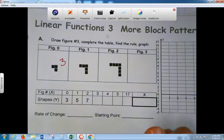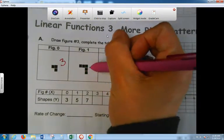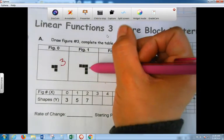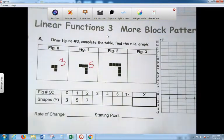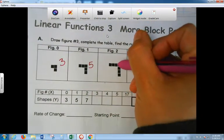6. Here? 6. No. Count? 1, 2, 3, 4, 5. Write it down. 7. 1, 2, 3, 4, 5, 6, 7. Good. So what are we increasing by? What are we changing by?